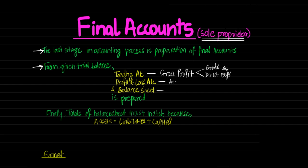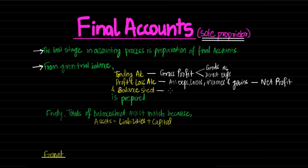In the Profit and Loss Account, all expenses, losses, incomes, and gains are recorded. So in Trading Account we know Gross Profit; in Profit and Loss Account we arrive at Net Profit. And Balance Sheet is prepared to know the assets and liabilities of a company.